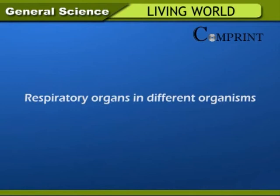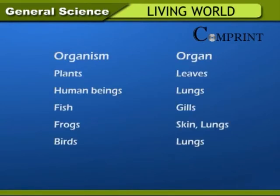Respiratory organs in different organisms: In plants, the respiratory organ is leaves. In human beings, the respiratory organ is lungs. In fish, the respiratory organ is gills. In frogs, the respiratory organs are skin and lungs. In birds, the respiratory organ is lungs.